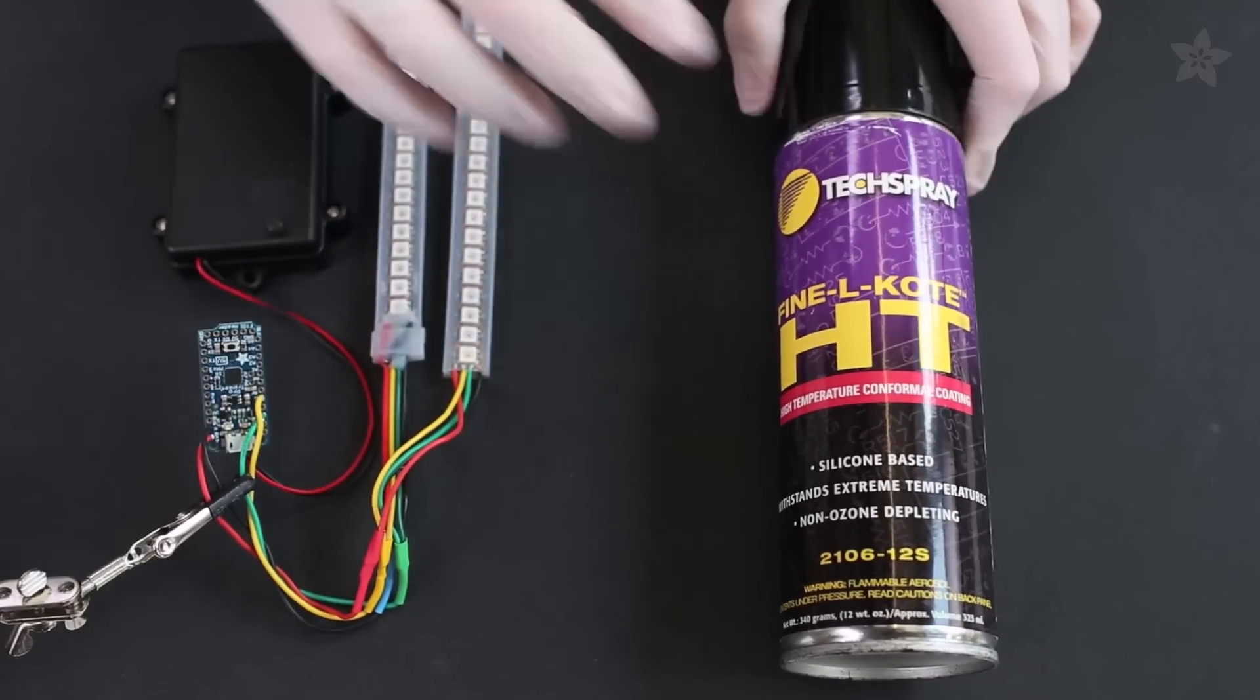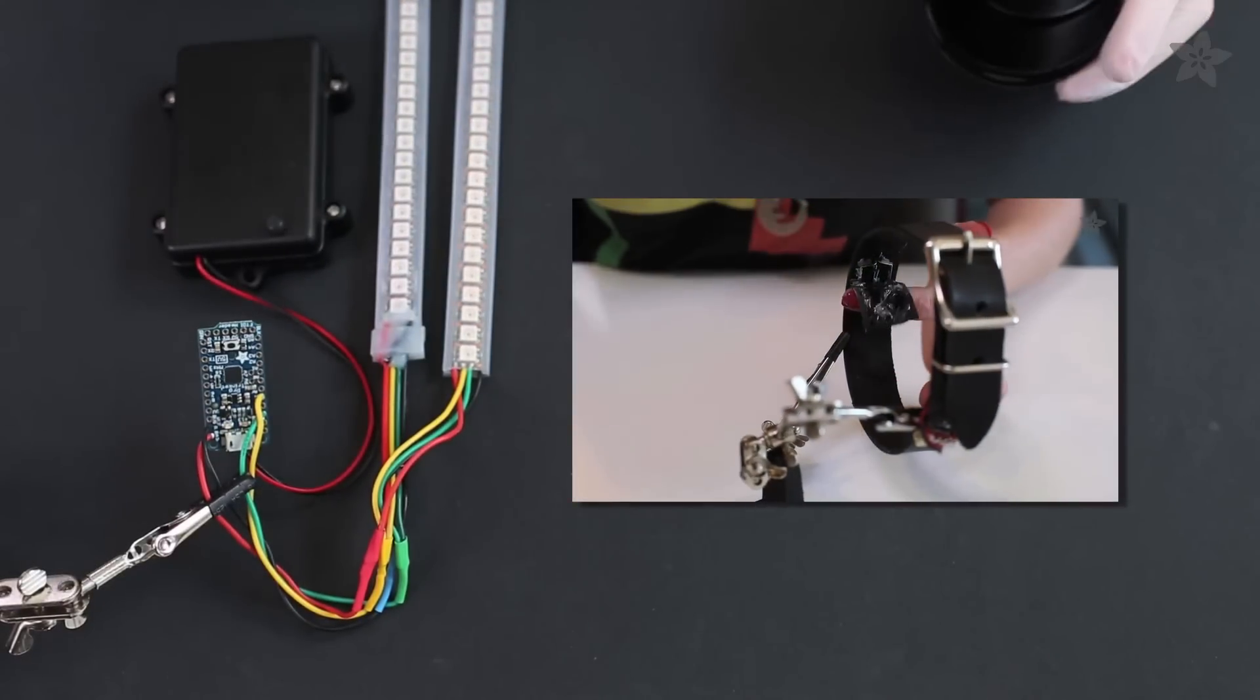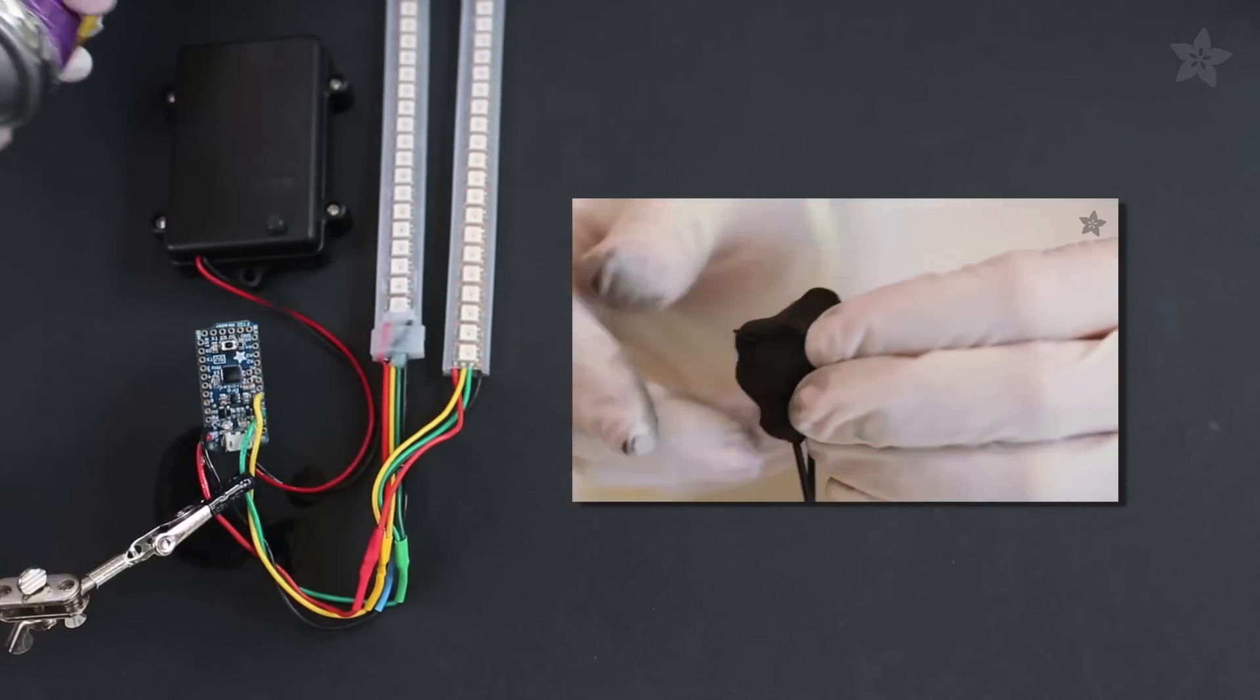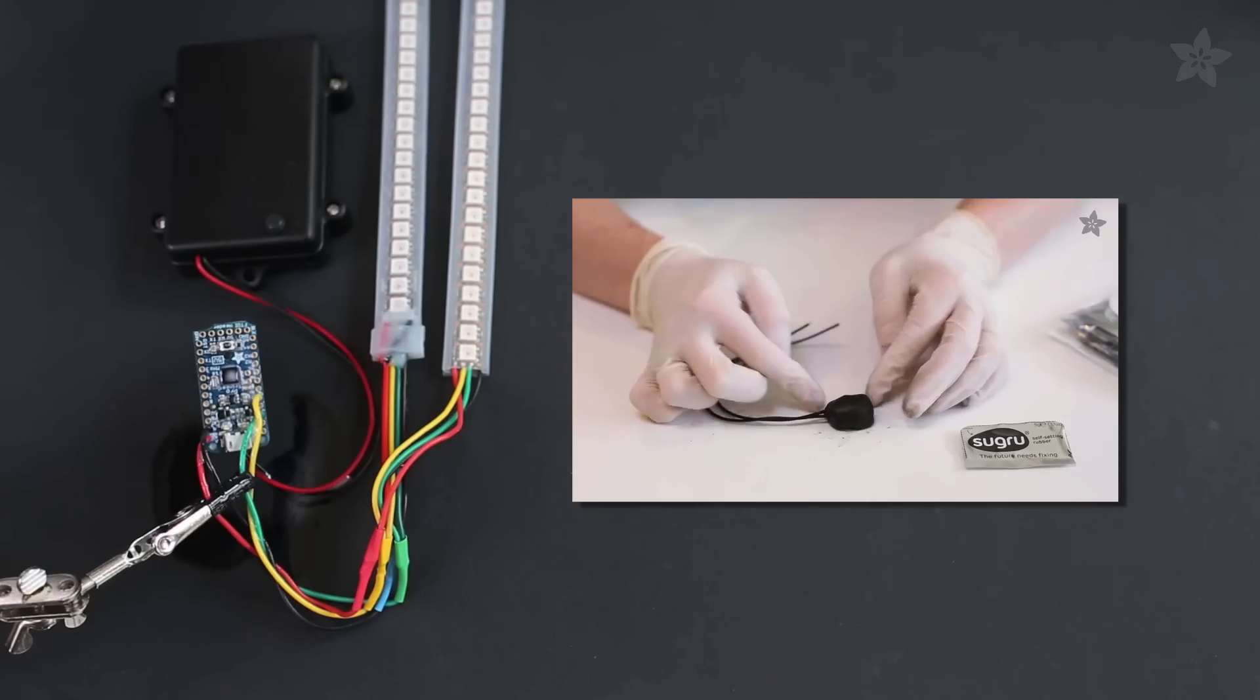After testing the assembled circuit, we'll want to waterproof it before affixing it to the bike. I'm going to use this spray-on conformal coating, but there are other techniques for rugged wearables you can learn about in this previous episode.